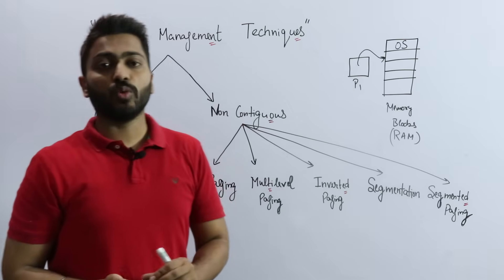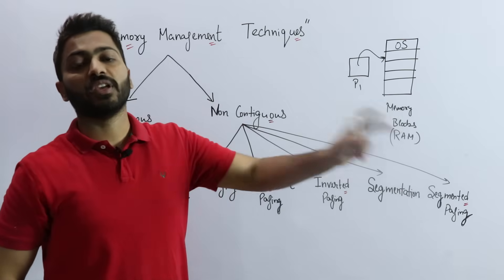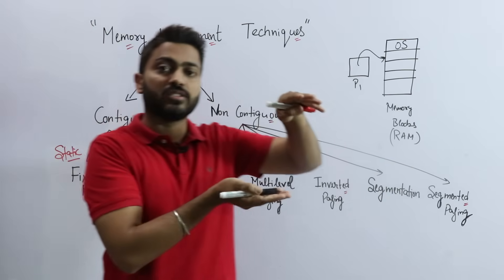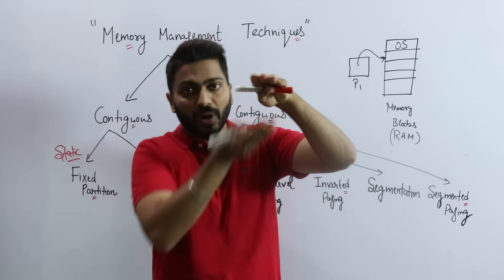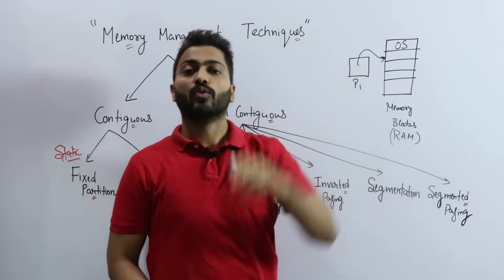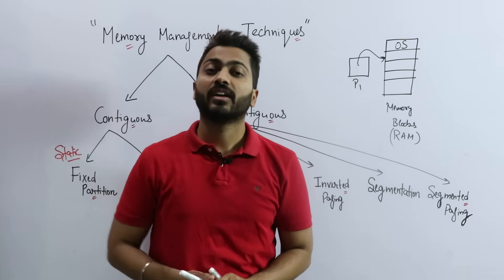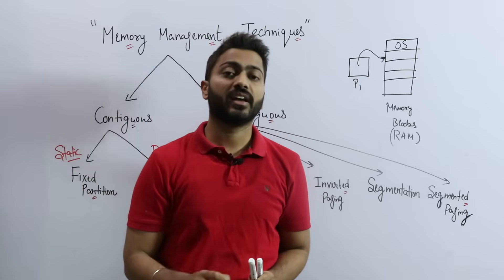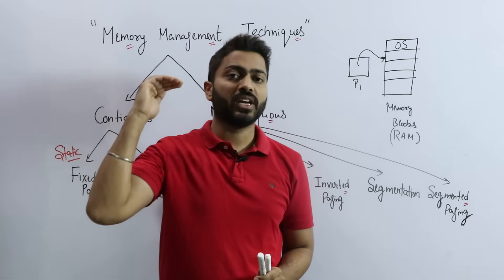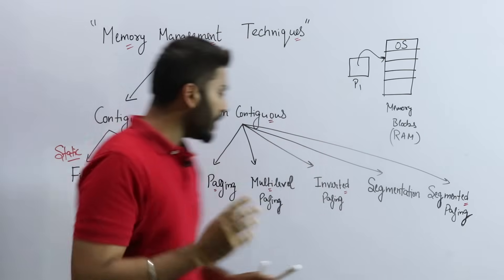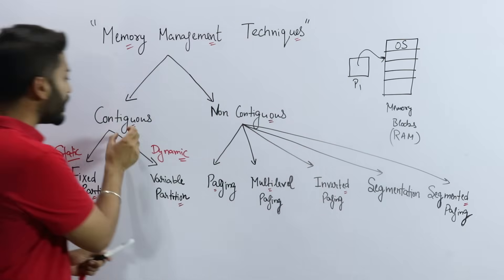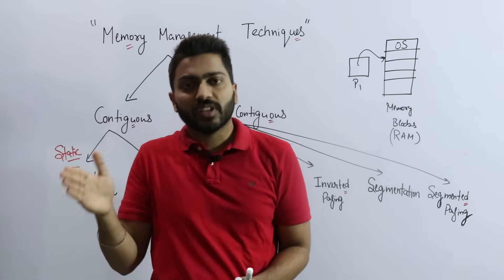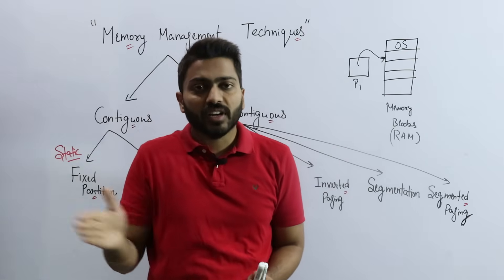When we turn on the system, the operating system is first mounted into main memory — it occupies some area of the main memory. The remaining portion is what we try to fill with as many processes as possible so that our degree of multi-programming can be high. Contiguous, as the name suggests, means continuous allocation.